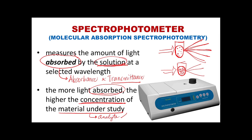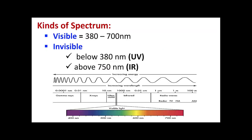In solution one, with very little analyte, there is little light absorbed, so absorbance is lower and transmittance is higher. In solution two, with a lot of analytes, more light is absorbed and less is transmitted. Therefore, absorbance is directly proportional to concentration and inversely proportional to transmittance.